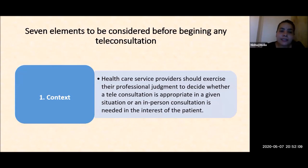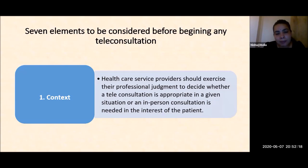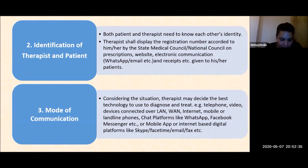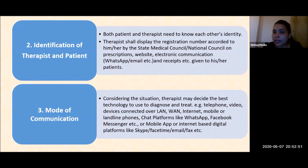The government has emphasized seven elements to consider before beginning any telepractice consultation. First is context: any healthcare service provider should exercise professional judgment to decide whether a teleconsultation is appropriate in a given situation or whether an in-person consultation is needed. Second is identification: both patient and therapist need to know each other's identity. The therapist shall display their registration number according to their state medical council or national council on prescriptions, websites, electronic communication, WhatsApp, email, and receipts.